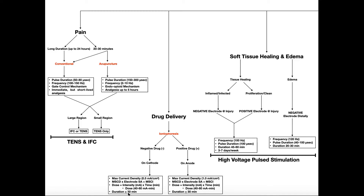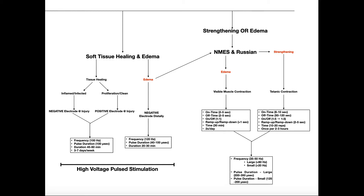Now for soft tissue healing and edema, I'm going to go to the next slide. Edema is unique here because it can actually be treated by both high-voltage pulse stimulation, or high-voltage pulse current, and also by NMES and Russian stimulation, which is basically NMES on steroids — they're basically the same thing. Let's start with looking at soft tissue healing. Suppose we have an area of the body where there's soft tissue that's damaged. The first thing we need to figure out is what stage of healing that soft tissue is in. We have three stages of healing: the first is inflammation or inflammatory, and the second is the proliferation or proliferative phase.